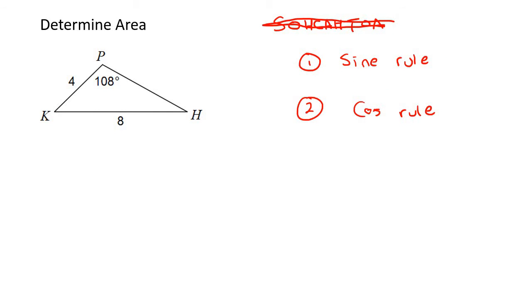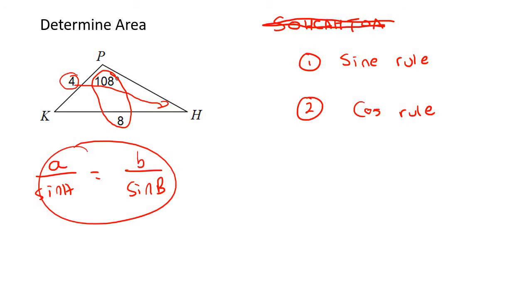So the sine rule goes A over sin A equals to B over sin B. And what we said was that it's all about finding opposites. So these two are opposites each other. And then we already have this four. What is that opposite? Well, that's opposite this angle. So if you haven't watched the video on the sine rule, then obviously what I'm saying right now probably doesn't make that much sense. So first, go watch the sine rule if that's you.